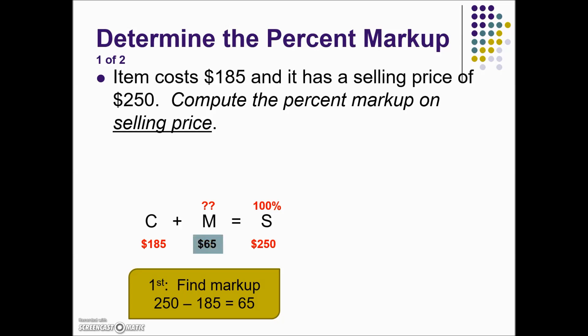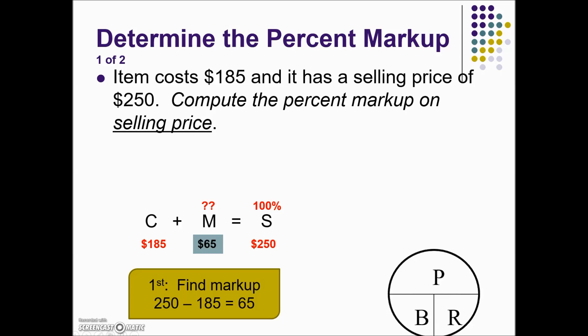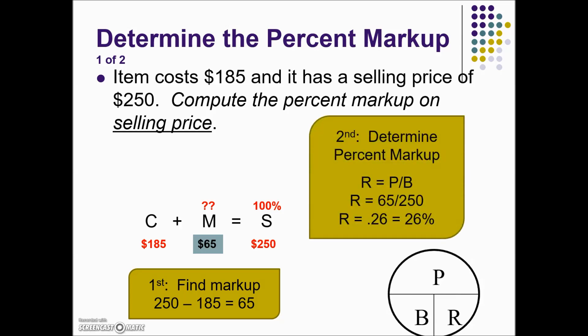We now have a dollar amount, and given that dollar amount, it acts as the part. We can then solve for the rate given our base of $250. To solve for rate, we take part divided by base, giving us a decimal, and converting that into a percentage. The markup rate based on selling price is 26%.